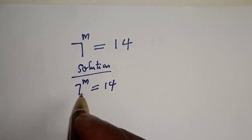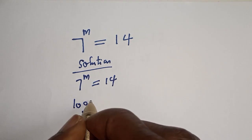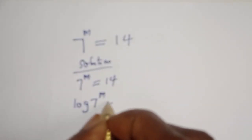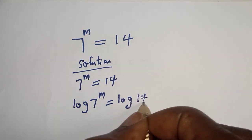Let's take the log of both sides. Log 7 raised to power m is equal to log 14.